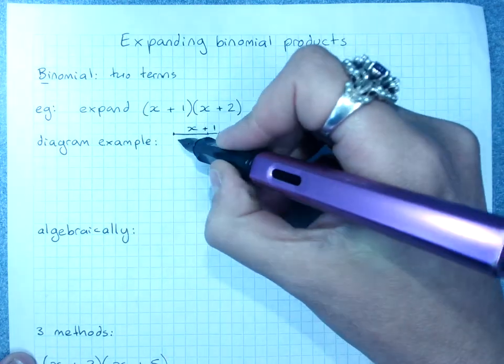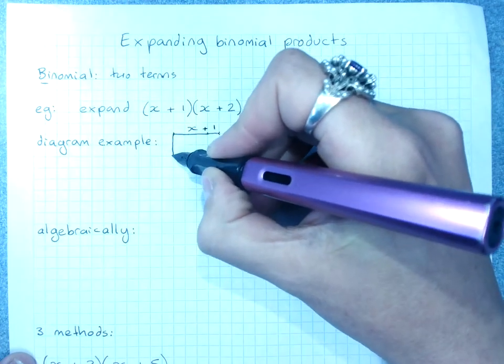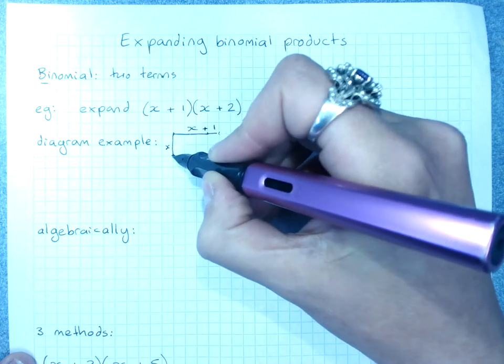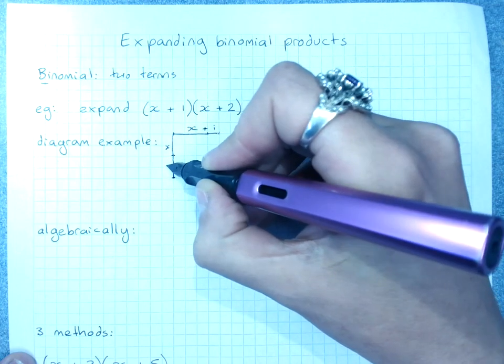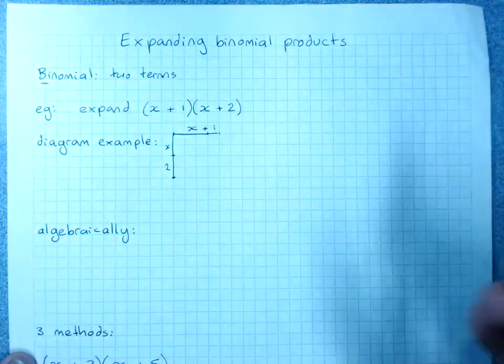And if I want to multiply that by x plus 2, that's x and that's 2. Please ignore the fact that x is apparently 2 in this example.